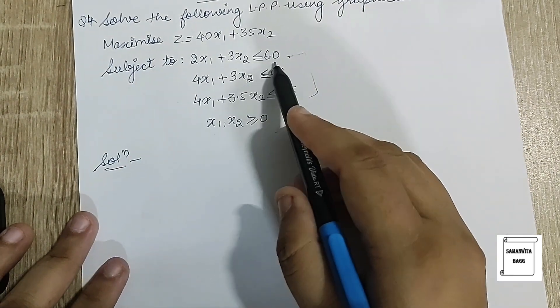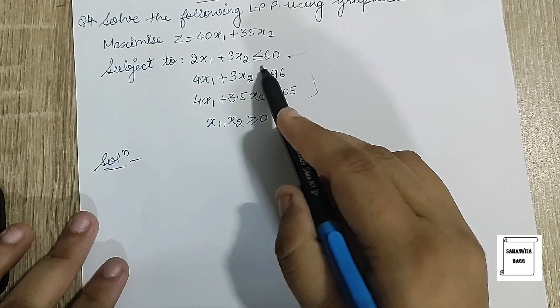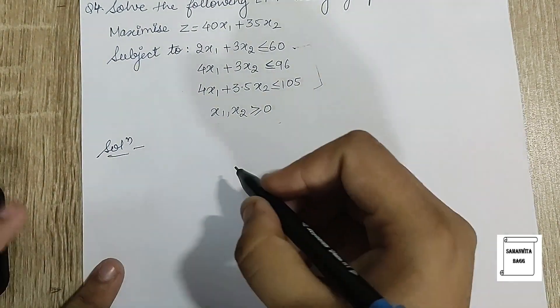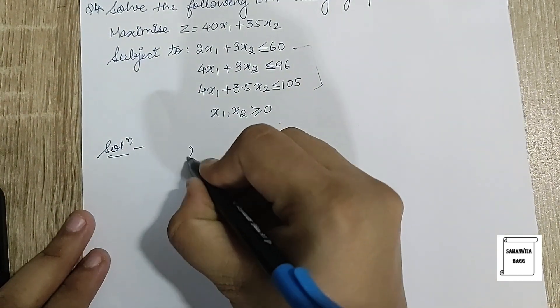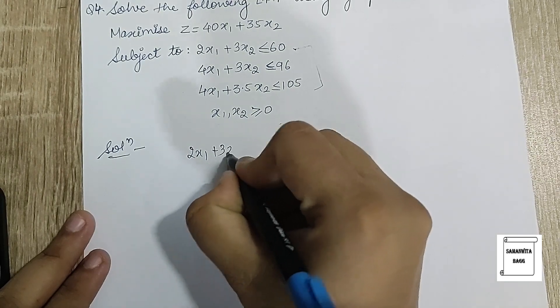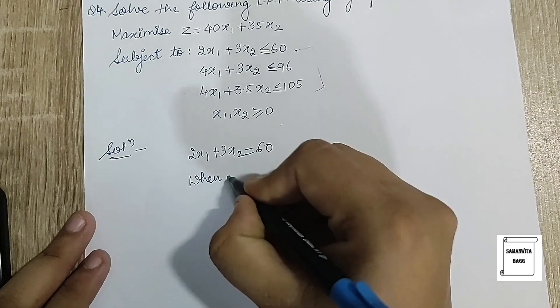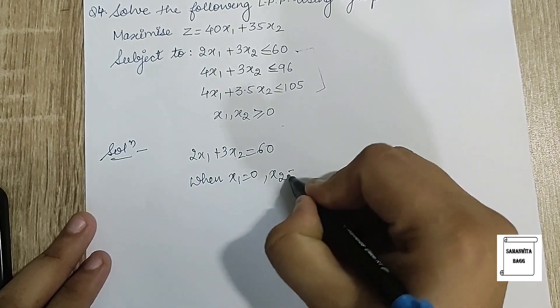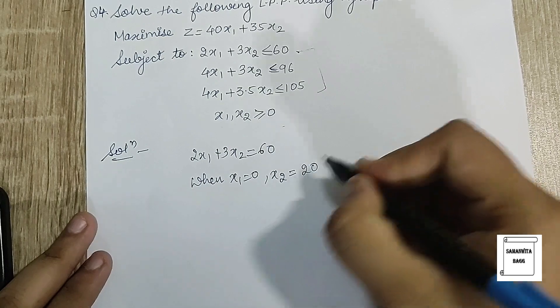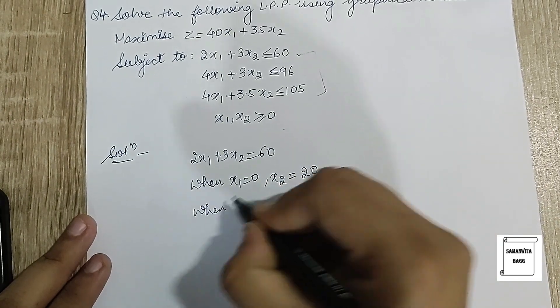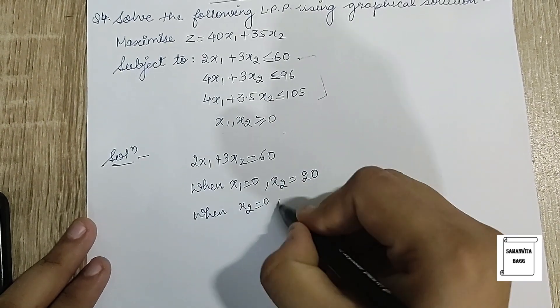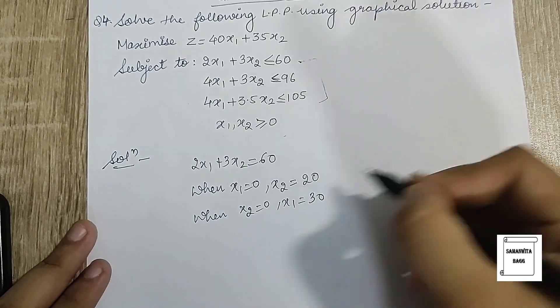We will start by assuming the first equation and converting the inequality sign into an equality sign. So the equation is 2x₁ + 3x₂ = 60. When x₁ is 0, x₂ will be 20, and when x₂ is 0, x₁ will be 30.